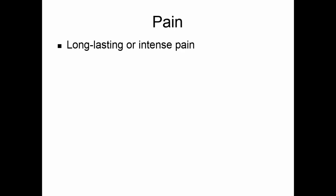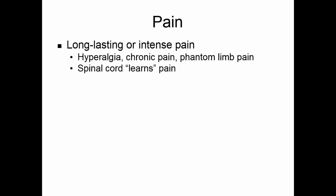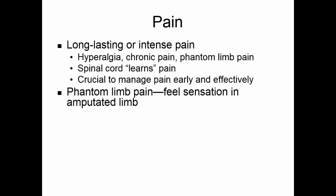Long-lasting or intense pain causes hyperalgesia, which may lead to chronic pain and phantom limb pain. The pain goes through the spinal cord and you almost learn a pain reflex — whenever it's triggered, you will feel significant pain. It's crucial to manage pain early and very effectively. Phantom limb pain occurs when you feel a sensation in an amputated limb. Your brain is wired to associate a particular nerve with information from a specific location, like your big toe. If that nerve is stimulated, your brain still thinks the information is coming from your big toe, even though it's gone.